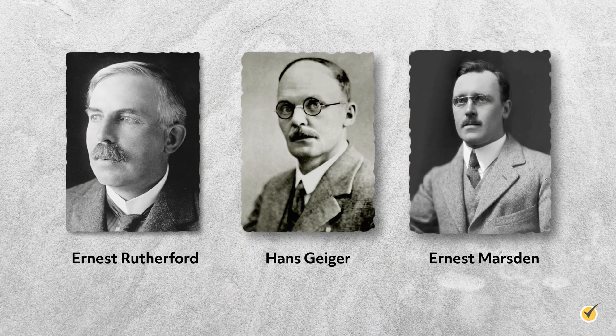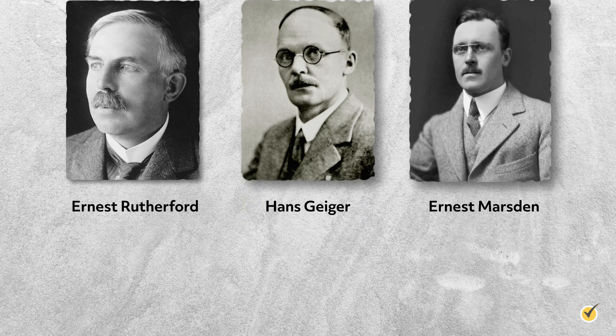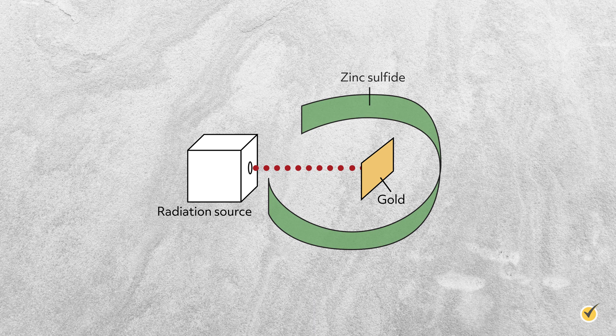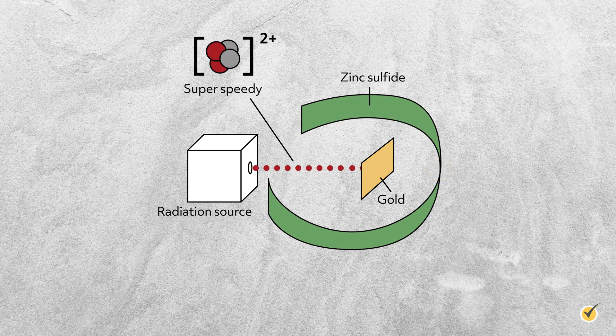It didn't take much longer for physicists to illuminate the inner workings of the atom. Just a few years later in 1911, Ernest Rutherford and his colleagues Hans Geiger and Ernest Marsden discovered the nucleus by shooting gold foil with alpha particles — high speed, positively charged helium ions. They placed a thin sheet of gold foil in front of a radiation source and in the center of a ring lined with zinc sulfide, which flashed when struck by an alpha particle. In this way, they could track the location of alpha particles after they struck the gold foil.